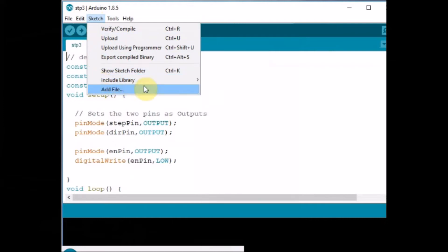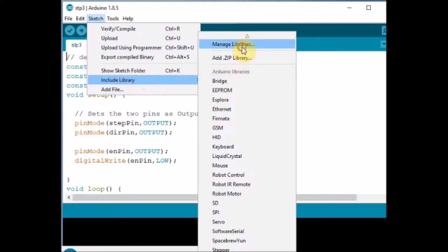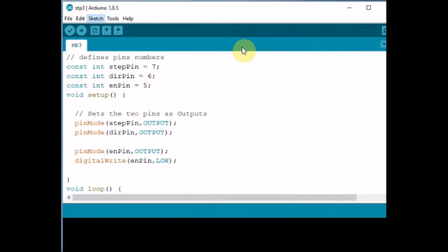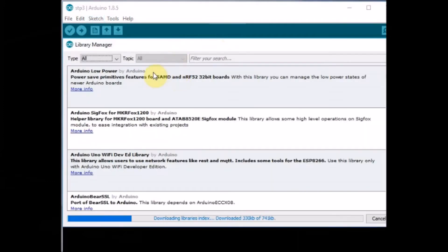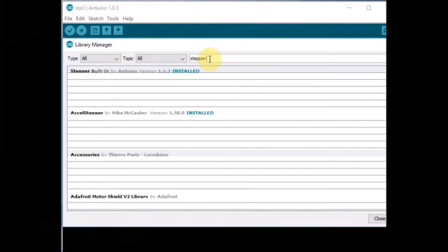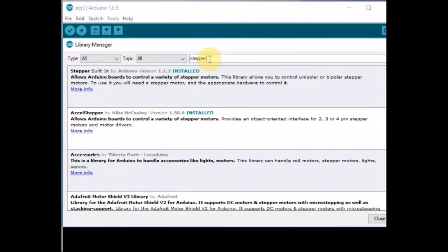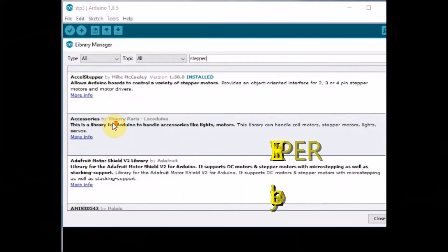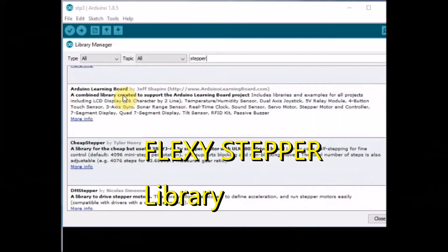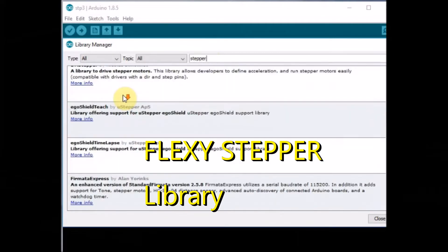Now let us install a library. Open manage libraries and then search for Flexi stepper. There is axle stepper library also, but here we will be using flexi stepper which is very much suitable for TB6600. Select the latest version of flexi stepper library and then click on install.